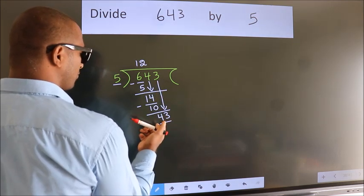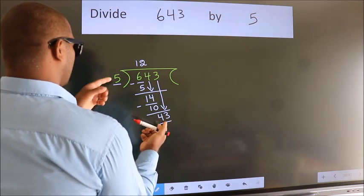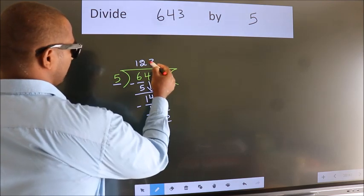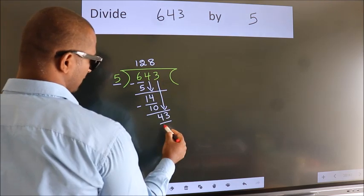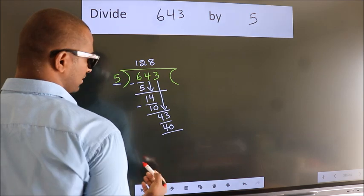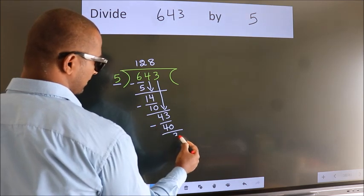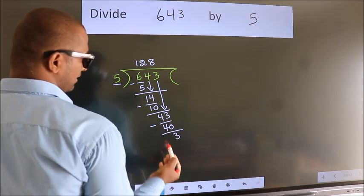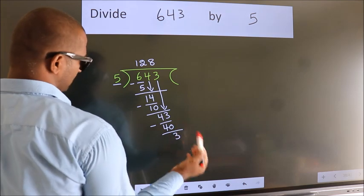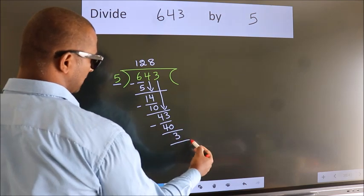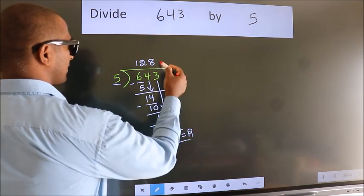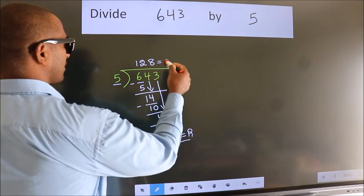A number close to 43 in the 5 times table is 5 eights, which is 40. Now we subtract — we get 3. No more numbers to bring down, so we stop here. This is our remainder. This is our quotient.